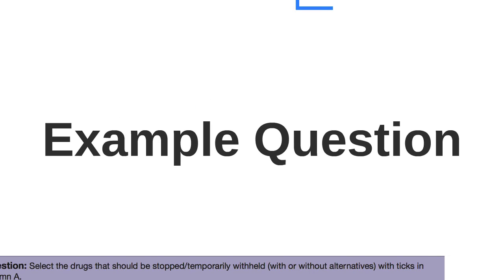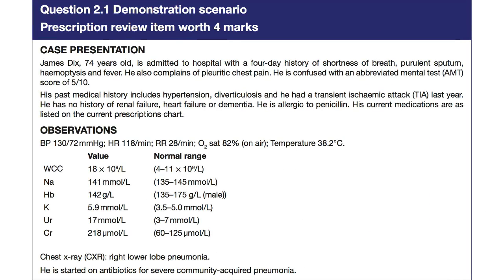Let's start by taking a look at an example question. We shall not go through the answer immediately, but we want you to keep the situation in mind during the episode and attempt to apply the things you learn. In this case we have a 74-year-old gentleman who is admitted to hospital with symptoms and signs suggestive of a pneumonia. We also note that his abbreviated mental test score is reduced and he has haemoptysis. Past medical history of note includes hypertension, diverticulosis and a recent transient ischaemic attack.